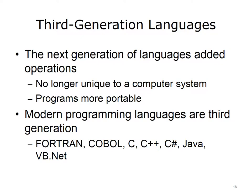The next generation of languages moved away from machine code as the basis of the programming statements. Instead, the syntax of the languages focused on operations that could be done, regardless of the underlying machine code. This meant that the same programs could be executed on different types of computer systems. Many modern programming languages belong to the third-generation category. Third-generation languages include Fortran, a language developed and used in the scientific and engineering community; COBOL, a language developed and used by the business and financial community; C, a language developed for large systems but now used extensively for other applications as well; C++, an object-oriented version of C; C Sharp, a portable object-oriented language developed by Microsoft; Java, a freely available, portable, object-oriented language; and VB.NET, an object-oriented version of Visual Basic developed by Microsoft.